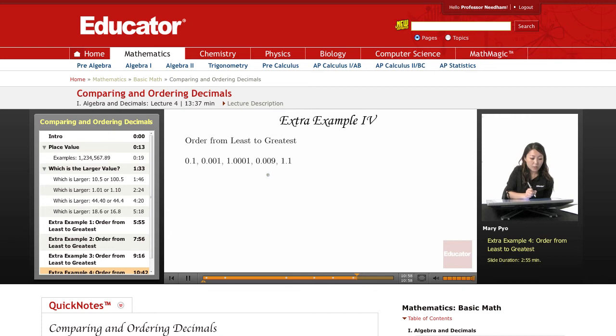Before you look at all the numbers, let's just look at the whole numbers. So that one has no whole number, zero, and whole numbers are all the numbers before the decimal place. So this is zero, this is one, zero, and one. So I know that the decimal numbers with no whole number, with zero as a whole number, are going to be the smaller numbers.